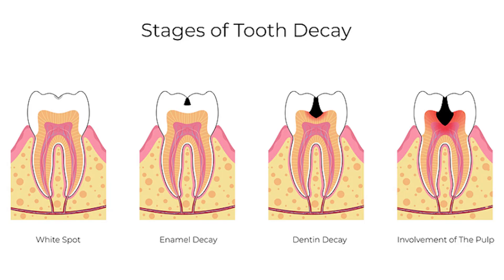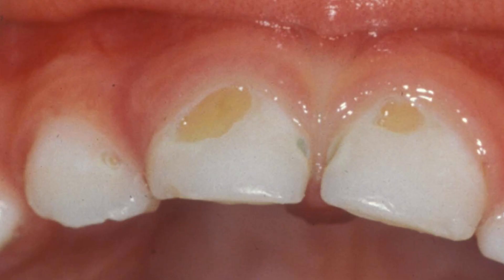We treat our dental caries as we treat our own teeth. This is one of the stages. The first stage is a white spot on the surface. We need to reverse this through a filling or fluoride application.